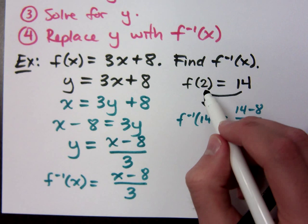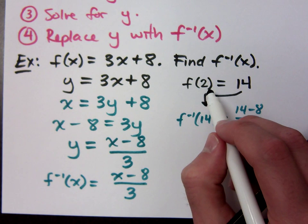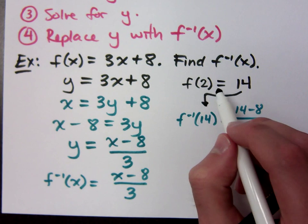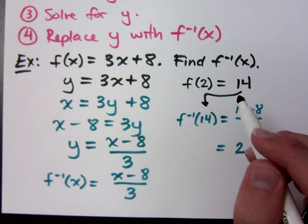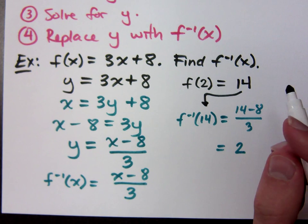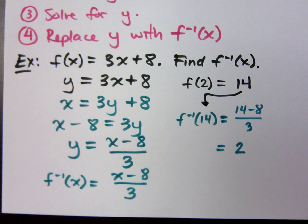So, f changed your input to something else, right? It took your input, and it worked with it. f inverse would take that output and say, all right, that's sweet. I can tell you where it came from. Do you believe me on that?